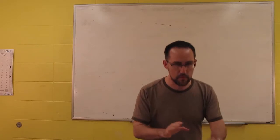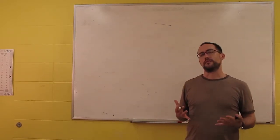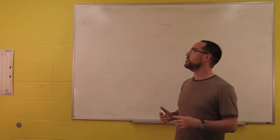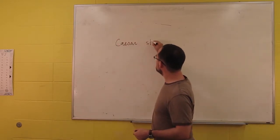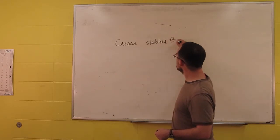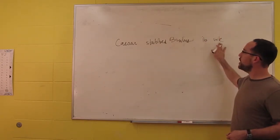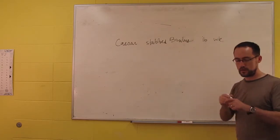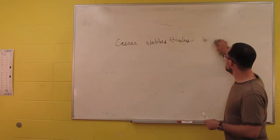When Davidson came up with his event semantics, he distinguished arguments from adjuncts. If you take a sentence like 'Caesar stabbed Brutus in the back with a knife,' Caesar and Brutus are the arguments. 'In the back' is an adjunct, 'with a knife' is an adjunct. Why? Because we can take them off. That's the key difference between arguments and adjuncts.